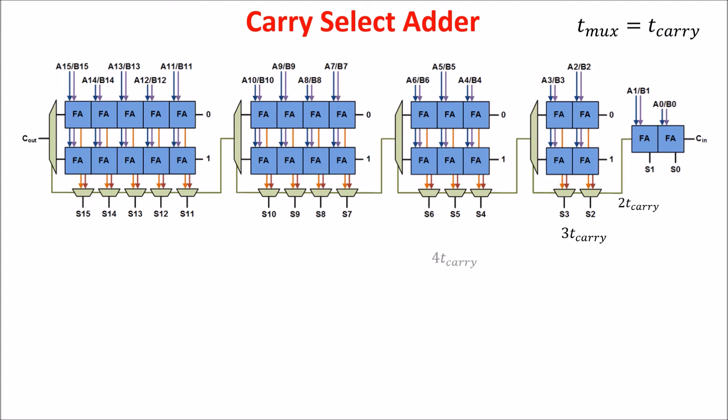So after 4T-carry, we have the sum and the carry out stable from the third block and so on. So the total delay is 6T-carry.